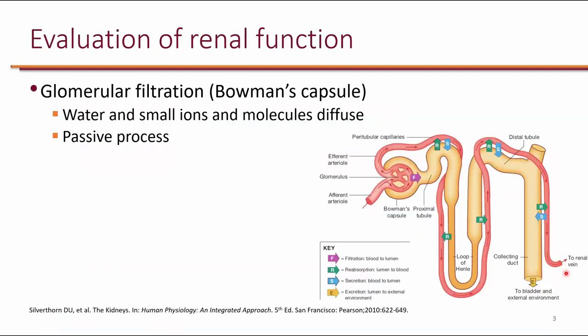Because aminoglycosides are almost exclusively cleared renally, it is important to be able to assess renal function. Let's take a look at what happens in the nephron. Generally speaking, there are three things that happen: filtration, secretion, and reabsorption.